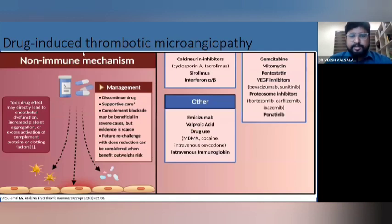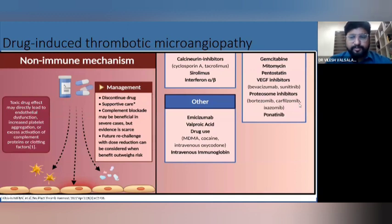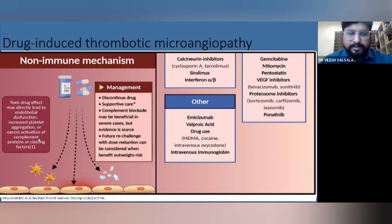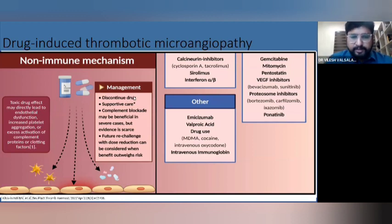Drug-induced TMA is a very important type with both immune and non-immune mechanisms. Drugs like calcineurin inhibitors (cyclosporine, tacrolimus), sirolimus, interferon alpha/beta, mitomycin, VEGF inhibitors, proteasome inhibitors like bortezomib, carfilzomib, ponatinib, emicizumab, valproic acid, MDMA drugs, and IVIg cause non-immune direct injury leading to endothelial dysfunction, increased platelet aggregation, and excess complement and clotting factor activation. In most cases, just discontinuing the drug gives reversal; supportive care is sufficient. Complement blockade may be beneficial in severe cases, and future re-challenge with dose reduction can sometimes be considered.